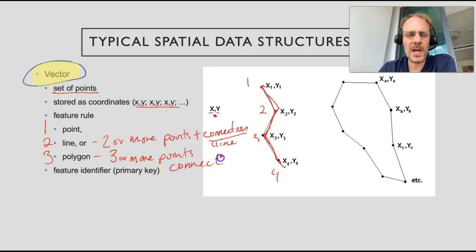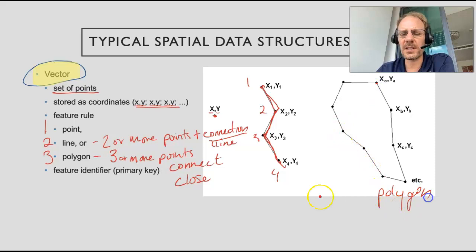The next one is a polygon. A polygon is going to be three or more points that we connect and then close. If we look over here we have all these points in our polygon. This is our line example - we have all these points, you see these points along the way.